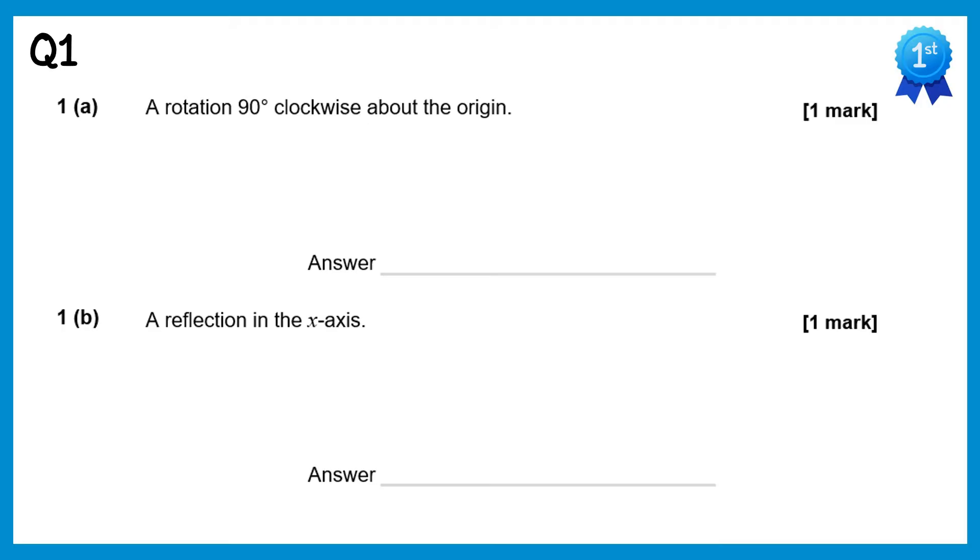For a rotation 90 degrees clockwise about the origin, the point (1,0) would map to (0,-1) and the point (0,1) would map to (1,0). For a reflection in the x-axis, the point (1,0) would map to (1,0) and the point (0,1) would map to (0,-1).